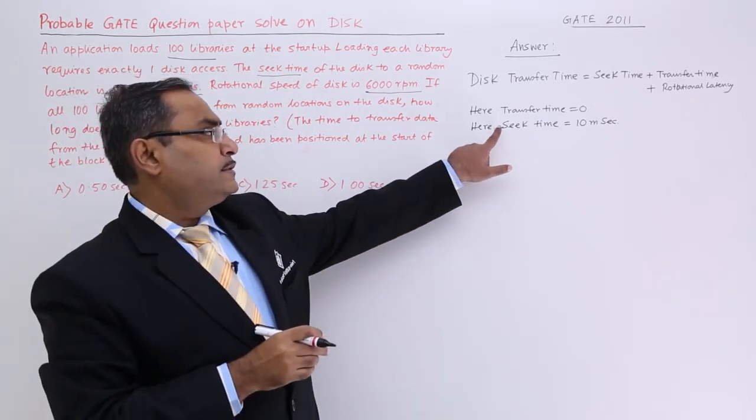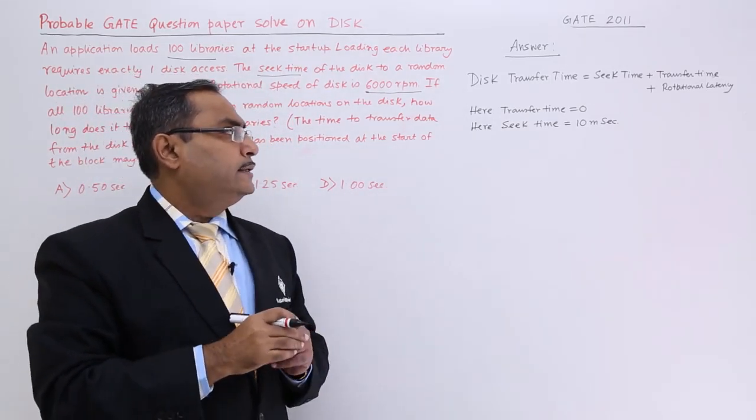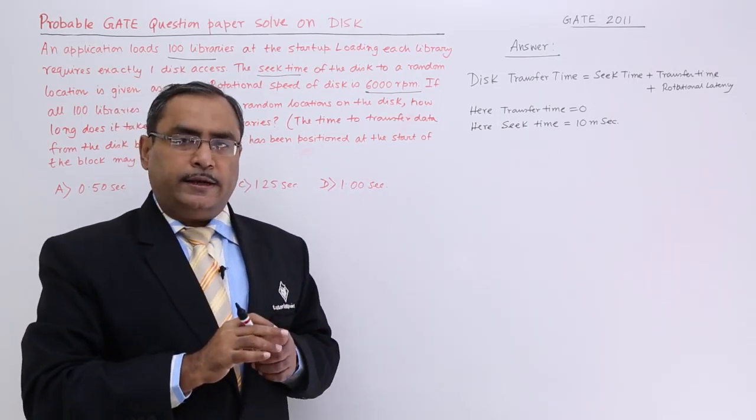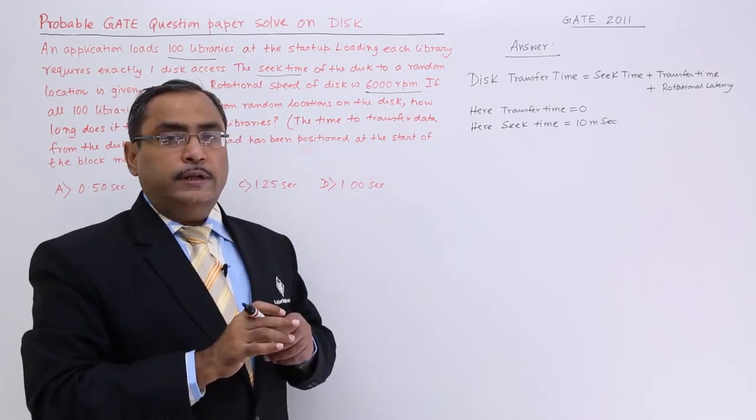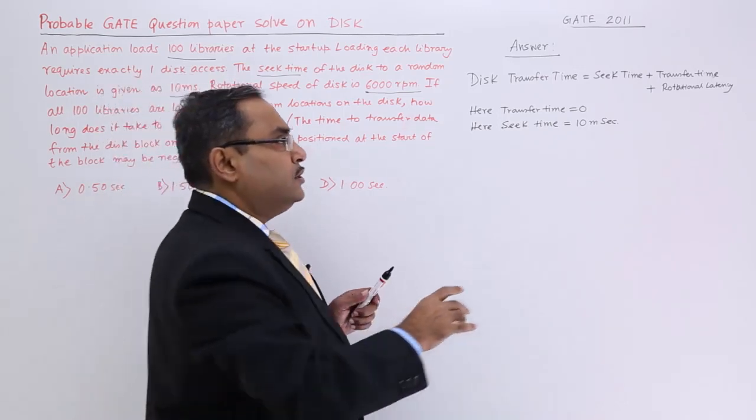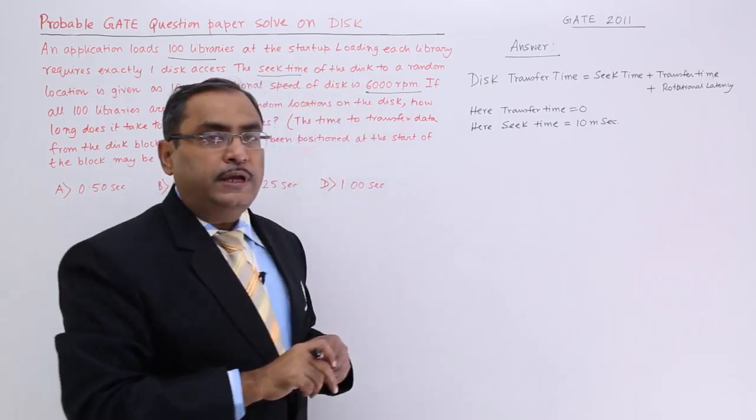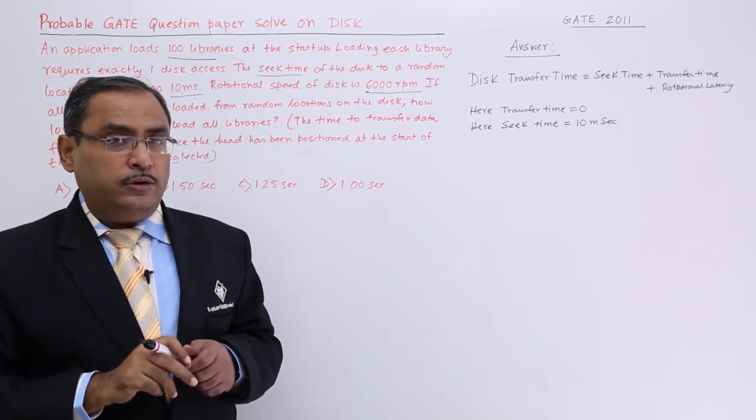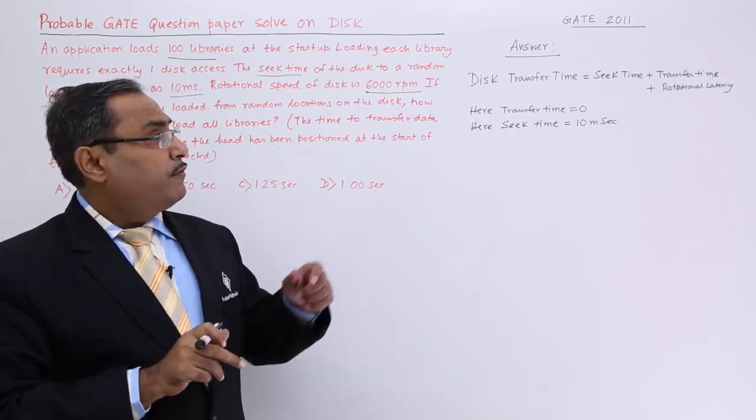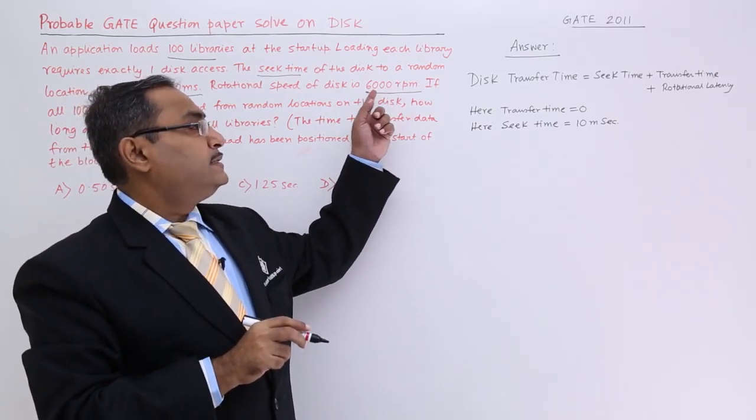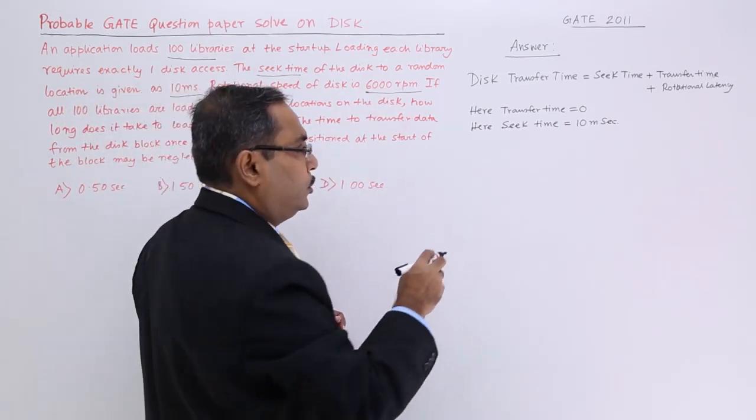Here the transfer time is equal to 0 and here the first seek time according to the question given is 10 milliseconds. You are remaining with only the rotational latency. That is why I wrote them at first because they were known and this value has to be calculated. How to calculate the rotational latency from the rotational speed that is 6000 rpm?